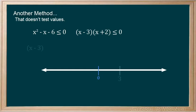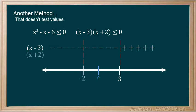To start, we know the value x minus 3 is positive when x is greater than 3, and negative for all other values. x plus 2 is positive beyond negative 2, and negative for the rest.